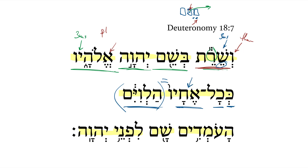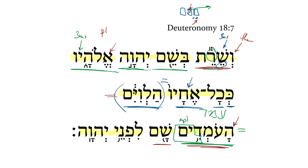Then we get another appositional phrase introduced with a participle — masculine plural. Notice the mem ending here. We have the verbal root ayin-mem-dalet, meaning 'to stand,' with the definite article. So we have a substantival use of the participle that is appositional to 'the Levites' — the ones standing there before the Lord.